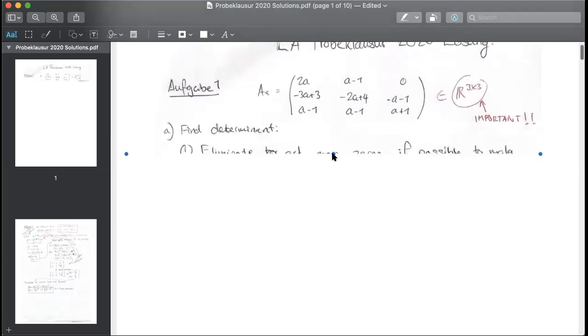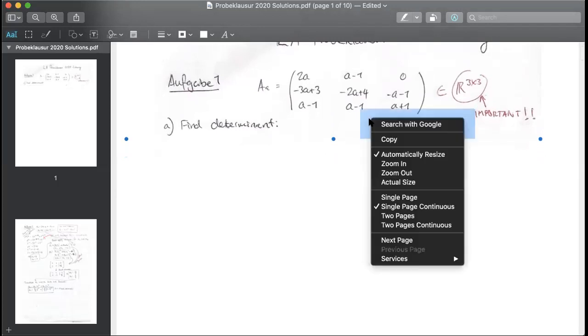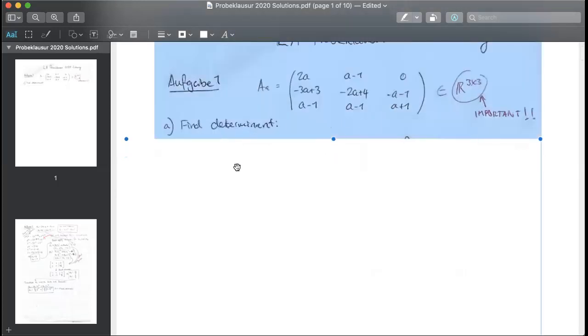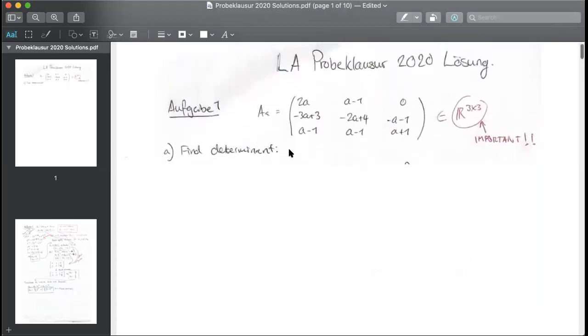And the first part of the question, they're going to ask us to find a determinant. There's two ways to find the determinant. We're only going to talk about one of the ways, and that's called the cofactor method. If you don't know what the cofactor method is, I encourage you to pause the video now and YouTube it. It's very simple.